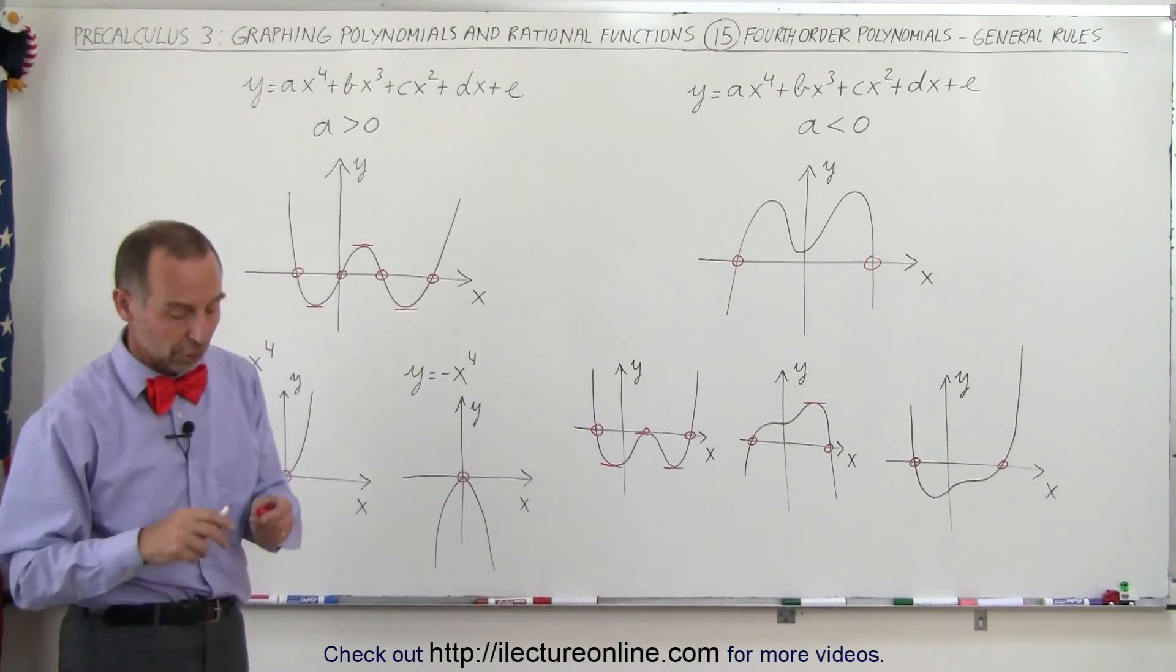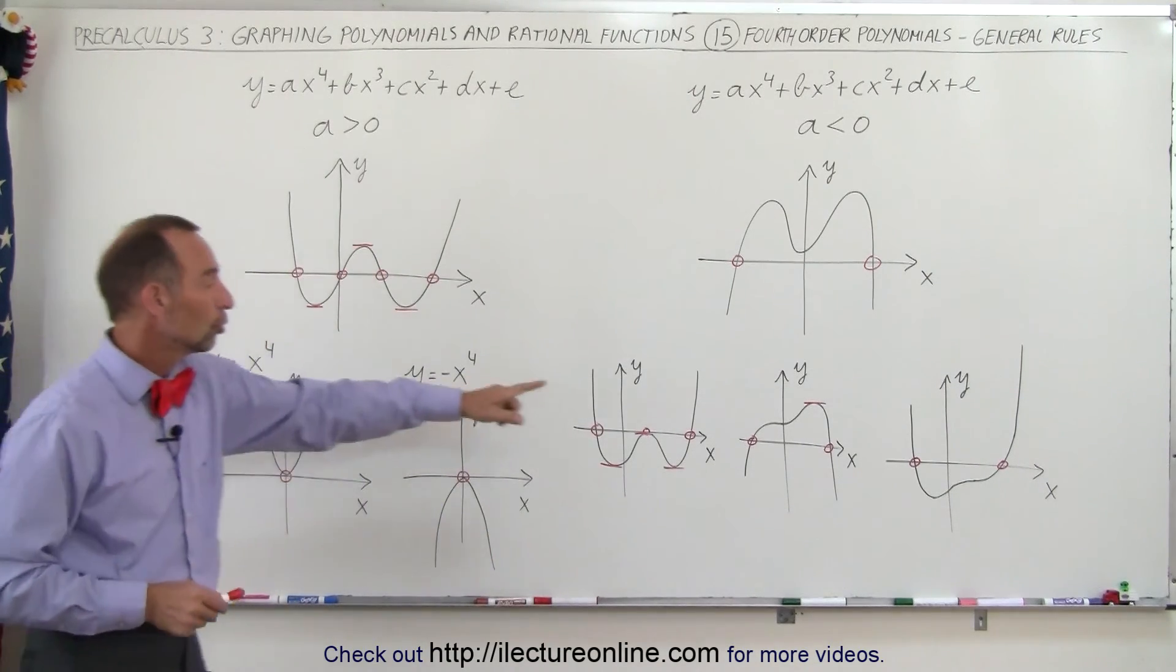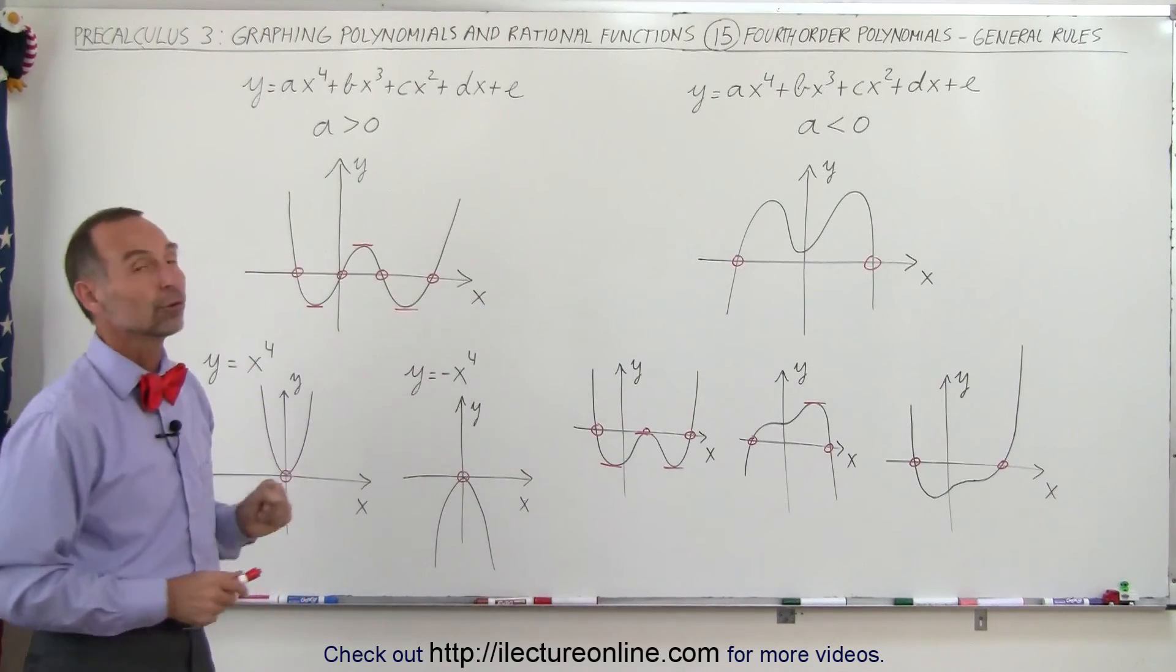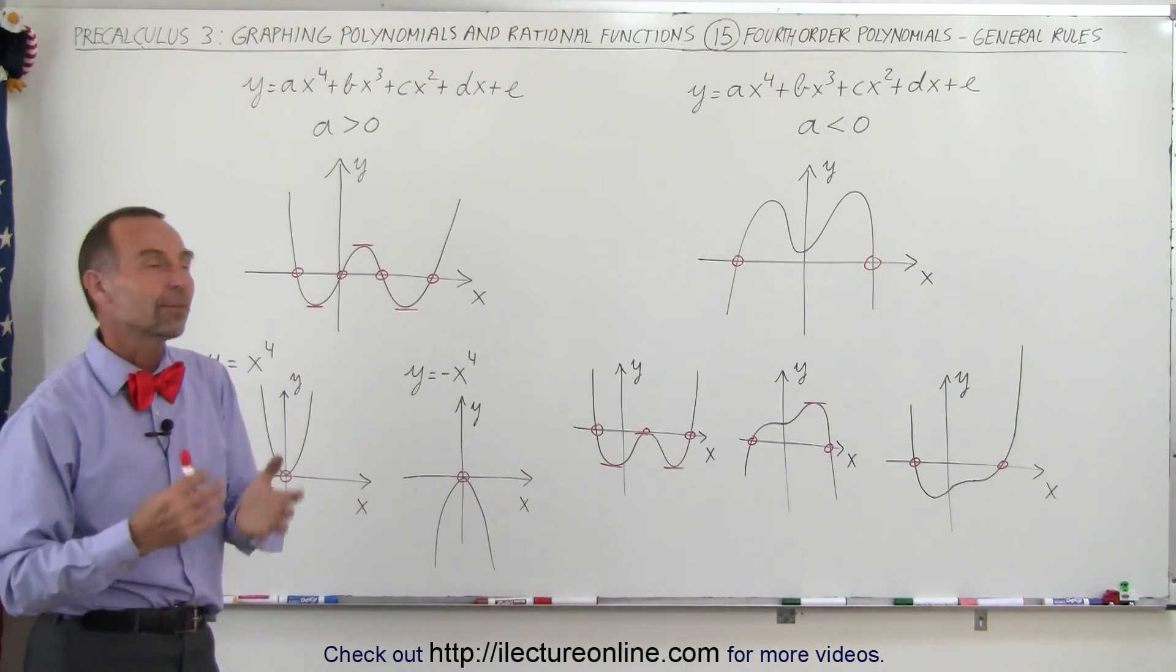So with a fourth-order polynomial, you can have anywhere from one to two to three to four roots, depending upon how the polynomial is situated.